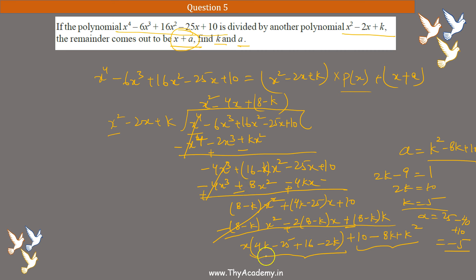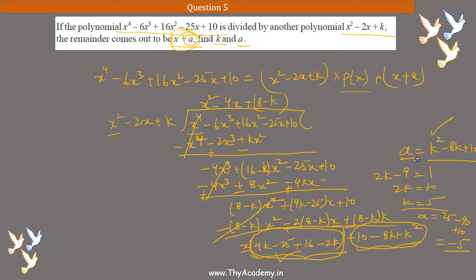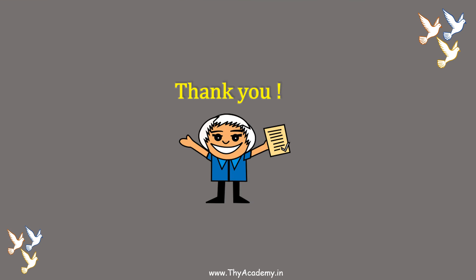So k = 5 and a = -5. We simply equated the coefficient of x in the remainder to 1 as given, found k, then substituted k's value to get a. If you have any doubts, ask in the comments. So that is it for this video. Thank you very much for watching. Bye.